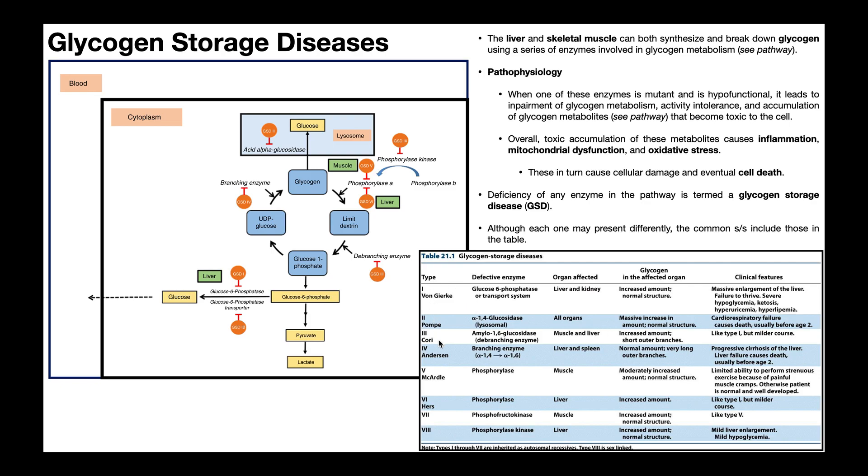Type 3 is called Cori's disease. This is a deficiency of the debranching enzyme, which is sometimes called amylo-1,6-glucosidase. This is going to affect muscle and liver because this is directly involved in glycogen metabolism specifically. This is going to present similarly to type 1 von Gierke disease, but it's going to follow a milder course.